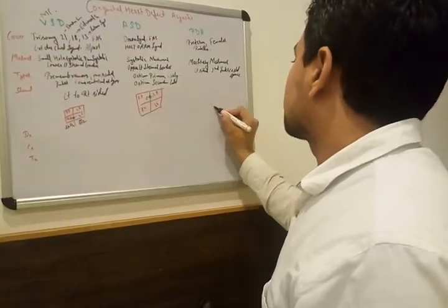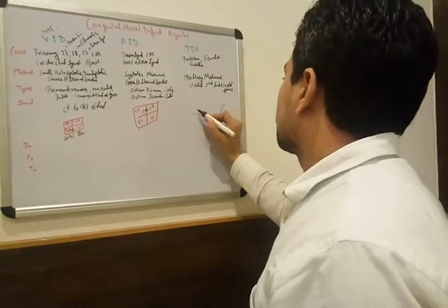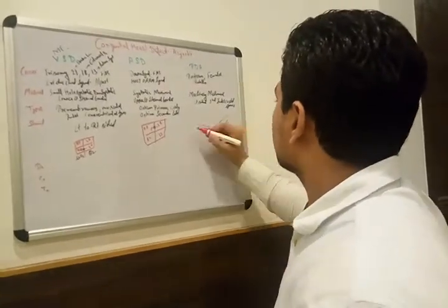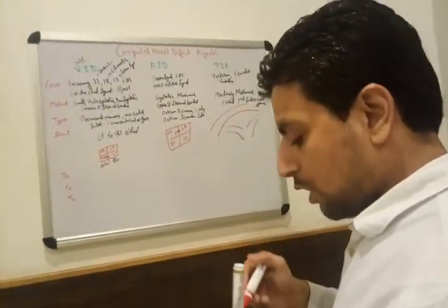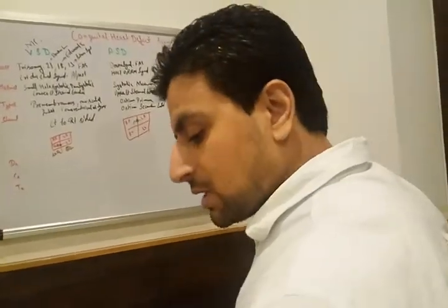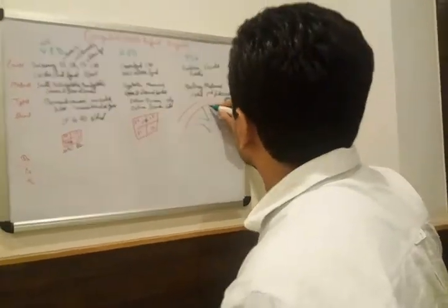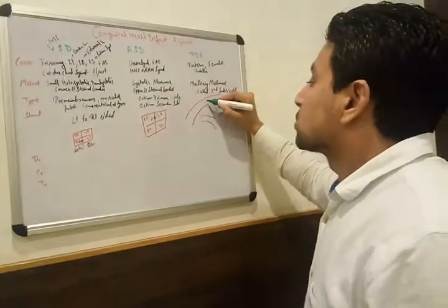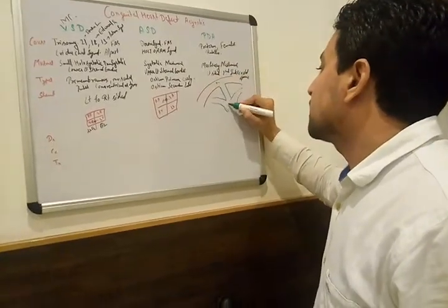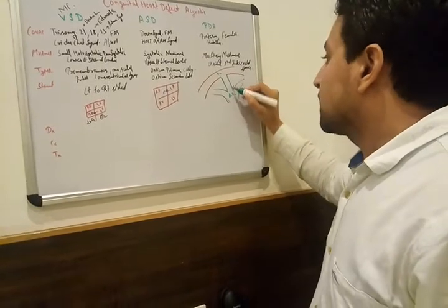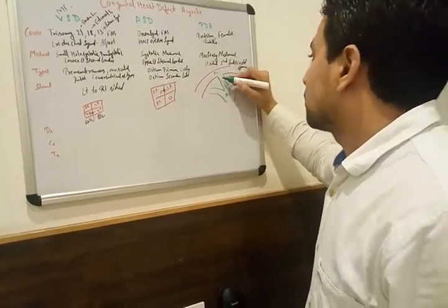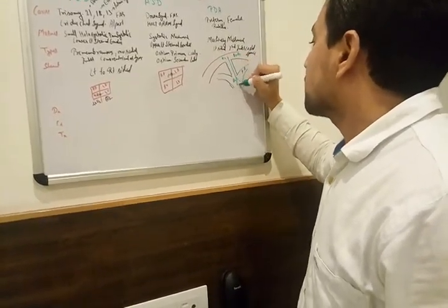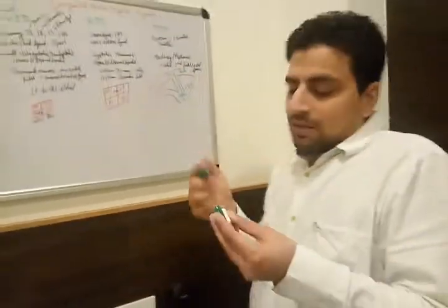In PDA, the ductus arteriosus connects the pulmonary trunk and the aorta. When it does not close after birth, aortic blood — which is oxygenated and under high pressure — enters the pulmonary artery, which has lower pressure and carries deoxygenated blood. Again, oxygenated mixes into deoxygenated, so there is no cyanosis.